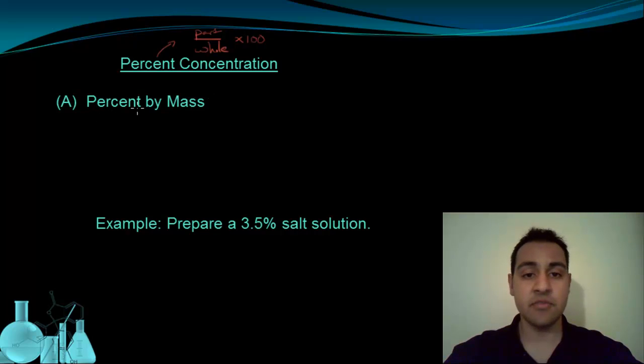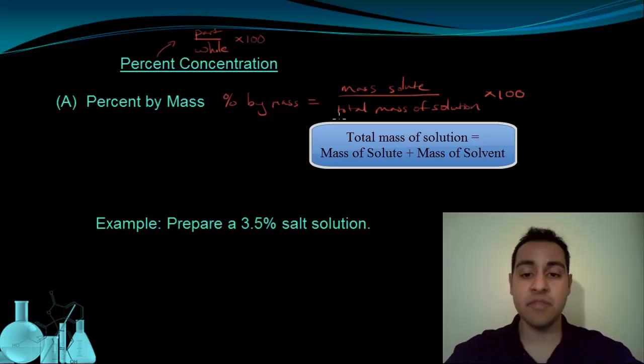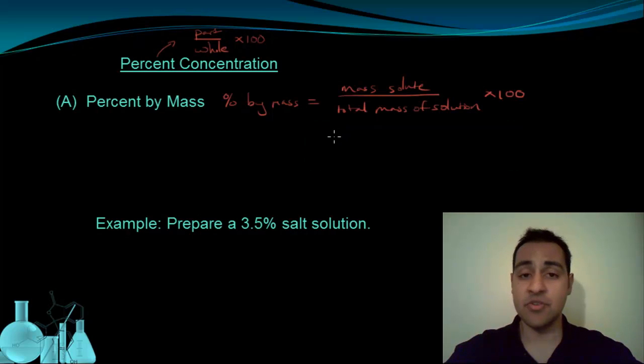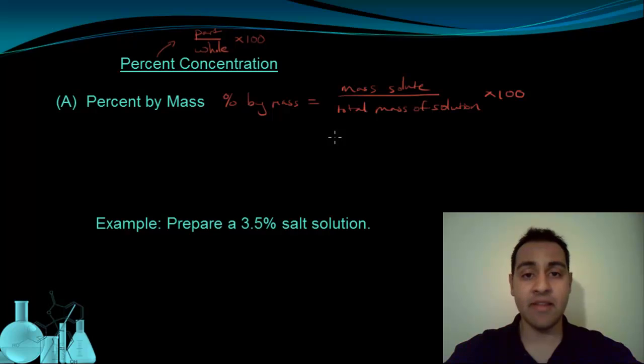So there are a few different ways to look at a percentage in terms of solution concentration. And the first of these is percent by mass. And percent by mass can be shown as percent by mass equals the mass of the solute divided by the total mass of the solution. And then this all multiplied by 100 to make it a percentage. Now, it's really important to remember that when you see something like this, total mass of solution, what that really means is the mass of the solute plus the mass of the solvent. Because when you dissolve one thing in another, you're combining their masses.